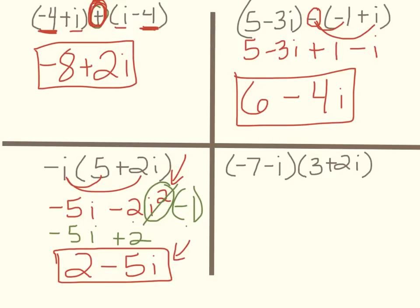Alright, and then this last one you actually will FOIL, because there's an implied multiplication sign right there in between them. So we go first, negative 7 times 3 is negative 21. And outer, negative 7 times 2i is minus 14i. And inner, negative i times 3 is minus 3i. And last, negative i times positive 2i would be minus 2i squared.